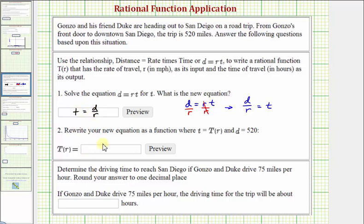And number two, we're asked to write a new equation as a function where little t equals big T of r, and d equals 520. So if t equals the function T of r, we'd have big T of r equals d divided by r. But we're given d equals 520, so our function T of r is 520 divided by r.